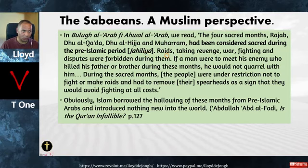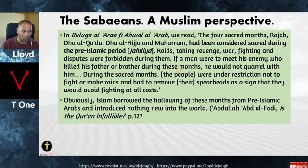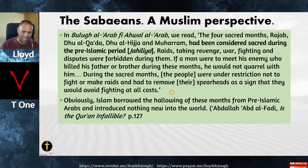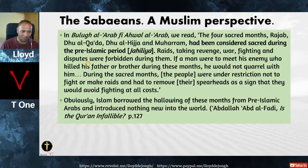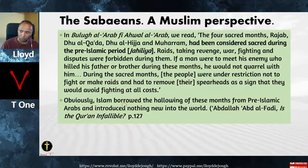If a man were to meet his enemy who killed his father or brother during these sacred months, he would not quarrel with him. During the sacred months, people had to remove their spearheads as a sign they would avoid fighting at all costs. Of course, the corollary is that outside the sacred months there was raiding. Muhammad was a raider — there was war, fighting, disputes. This is jihad. Islam borrowed the hallowing of these months from pre-Islamic Arabs and introduced nothing new into the world.